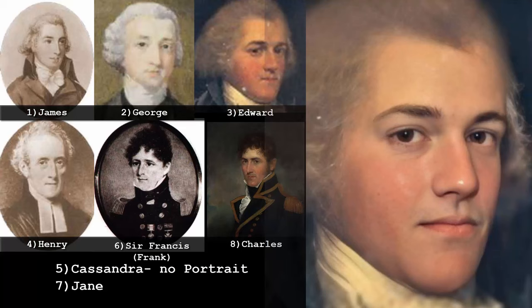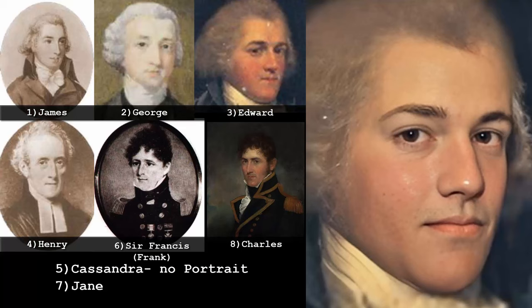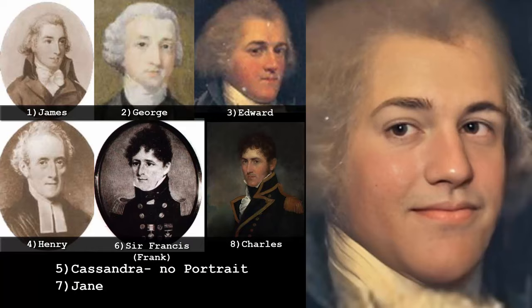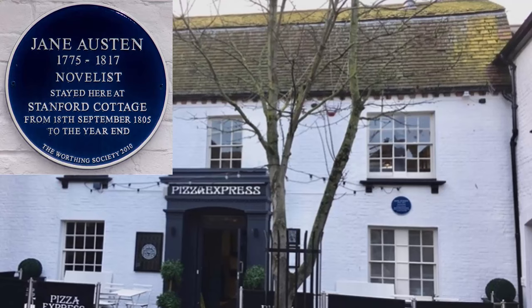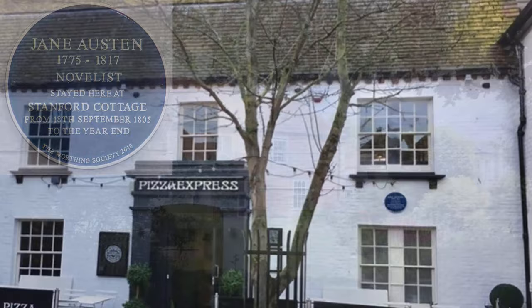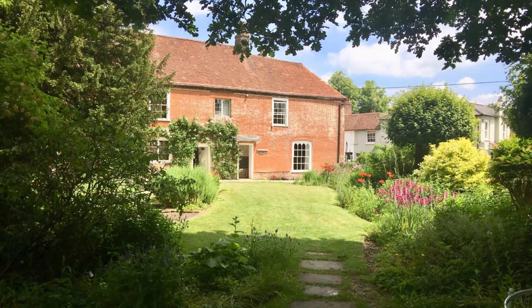Jane's brothers pledged to make annual contributions to support the family. For the next few years they rented in Bath, then moved to Stanford Cottage in Worthing, Sussex, and a year later in 1806 lived with her brother Frank. In 1809, their fortunes settled when brother Edward offered them a cottage on his estate at Chawton.